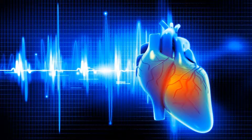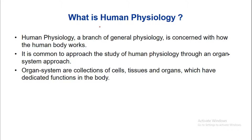The fact that we are sensing, feeling, and knowledgeable beings is a part of this automatic sequence of life. These special attributes allow us to exist under widely varying conditions. Human physiology is a branch of general physiology concerned with how the human body works. It is common to approach the study of human physiology through an organ system approach. Organ systems are collections of cells, tissues, and organs which have dedicated functions in the body. Here, we are going to study the normal parts and normal functions of the human body.